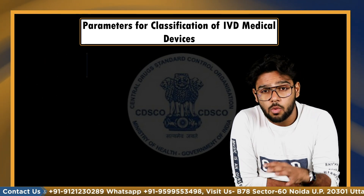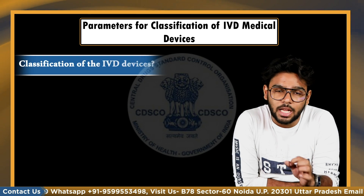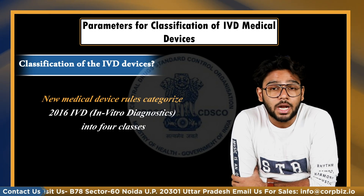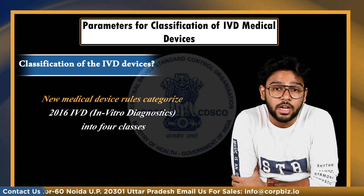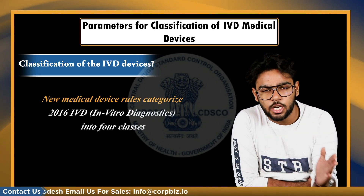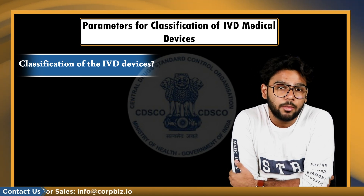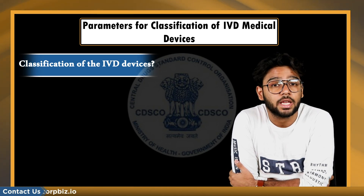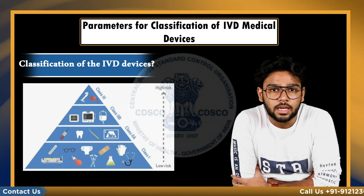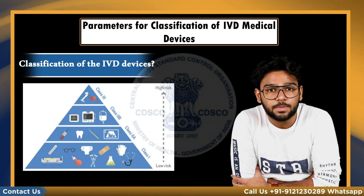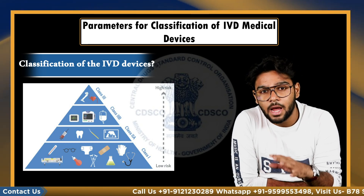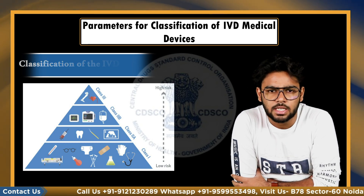Next, we are going to talk about the classification of these IVD devices. The new medical device rules 2016 categorize IVD in vitro diagnostics into four classes ranging from Class A to Class D, based on the parameters described in the official Gazette published on 17th October 2016. Class A are low risk devices. Class B are moderate risk. Class C are moderate to high risk. And Class D are high risk devices.